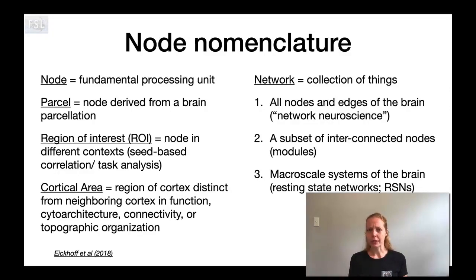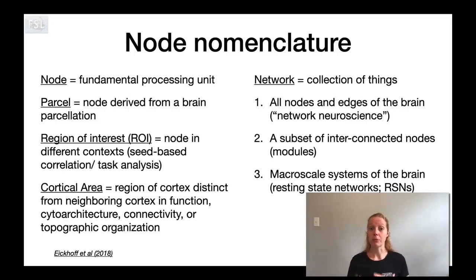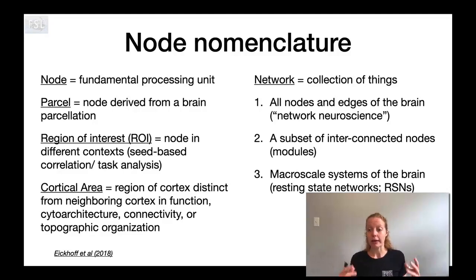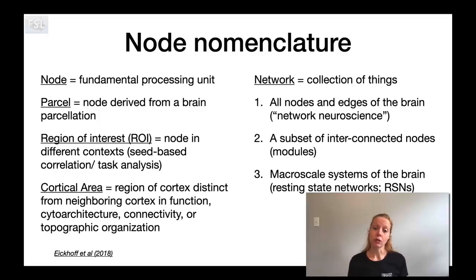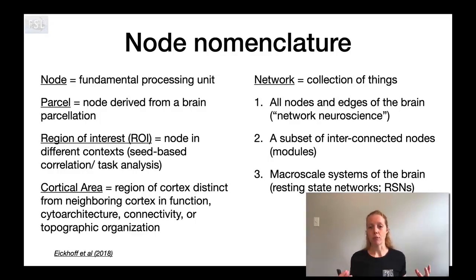The word 'network' can be confusing. Within resting state fMRI it can refer to many different levels. It might describe the brain as a whole as one network, or a subset of interconnected nodes — where a dozen nodes might cluster together — which is also known as a module in network neuroscience. Most commonly, networks refer to resting state networks, which are macroscale systems of brain areas that are separated but similar and tend to be strongly connected to each other.